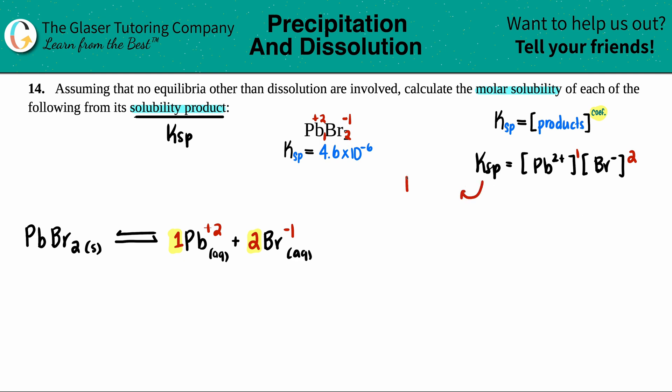Now the Ksp was 4.6 times 10 to the negative six. But the thing is, I don't know what these concentrations are. They didn't say. So we have to label it as a variable. So I'm going to come back over here and I'm just going to say, I don't know how much Pb2+ I have. So I'm going to label it as a variable. Let's pick X.